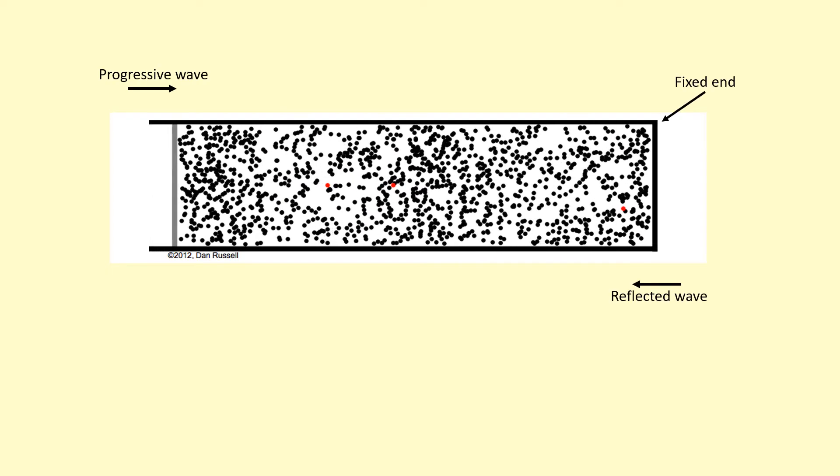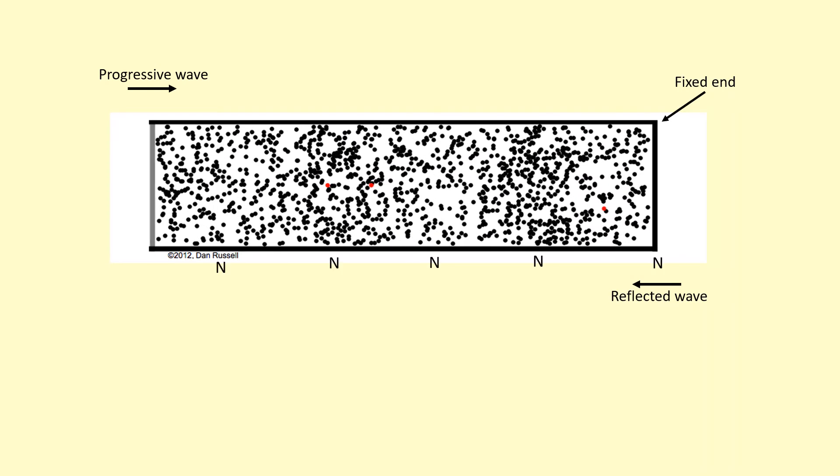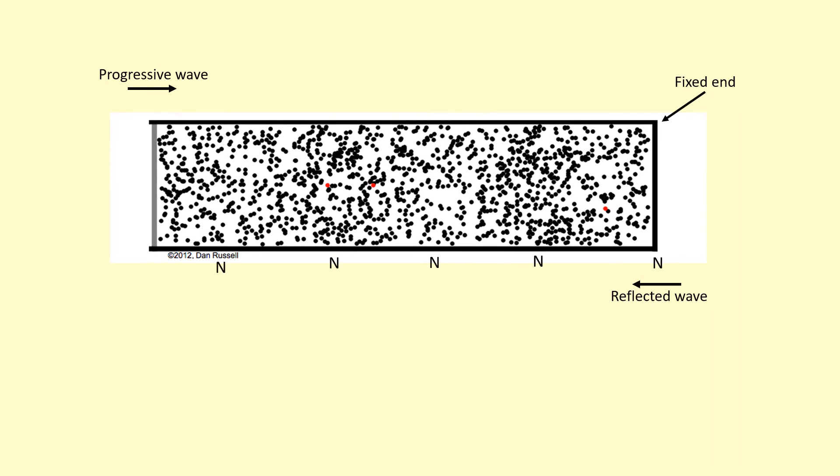Stationary waves can be formed with both transverse and longitudinal waves. So here we've got a longitudinal wave. Let's say it's sound. It's going in this direction here and at the end of the tube it's reflecting and it's superposing with itself. And you can see there's points where the particles aren't oscillating at all. Those are the nodes.